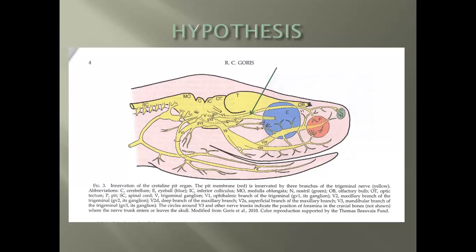Next you're going to see what we call the trigeminal nerve. The trigeminal ganglion, or TG, branches out — everything labeled with a V. V1 and V2 do innervate directly into the pit, taking direct sensory information from the pit and sending it back to the brain. This is very closely related to the eye, which, as we'll see later, affects their vision.